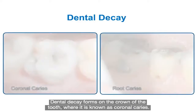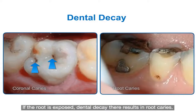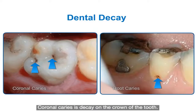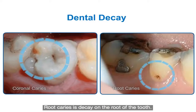Dental decay forms on the crown of the tooth, where it is known as coronal caries. If the root is exposed, dental decay there results in root caries. Coronal caries is decay on the crown of the tooth; root caries is decay on the root of the tooth.